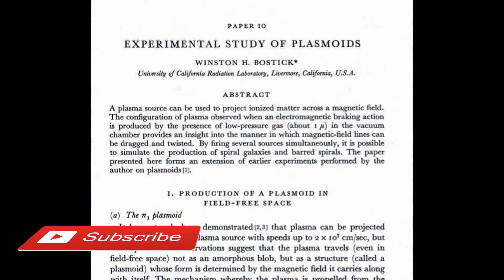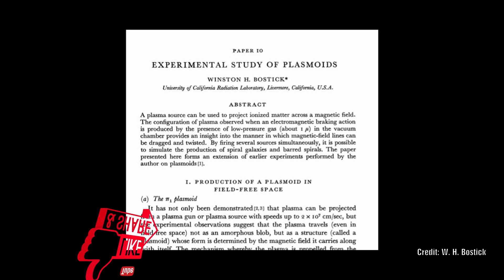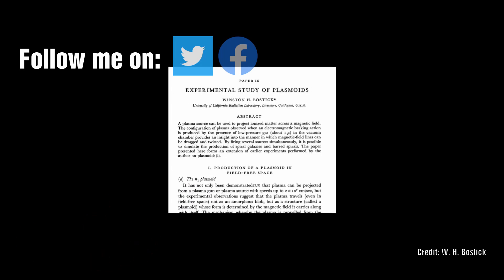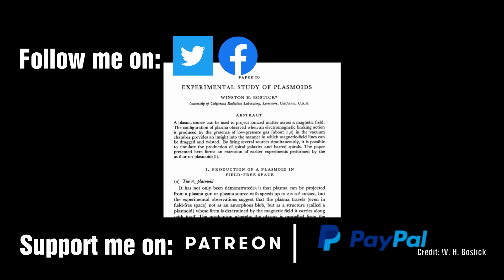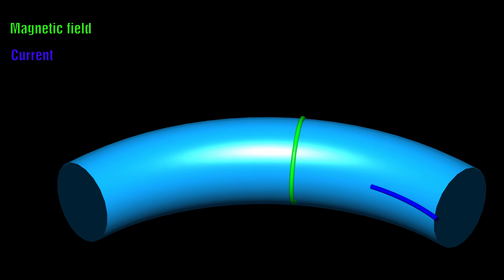Plasmoids is a term first coined by Winston Bostic in 1956 to describe a self-contained plasma entity. These entities can take on a variety of shapes, including cylinders and most commonly toroid shapes.